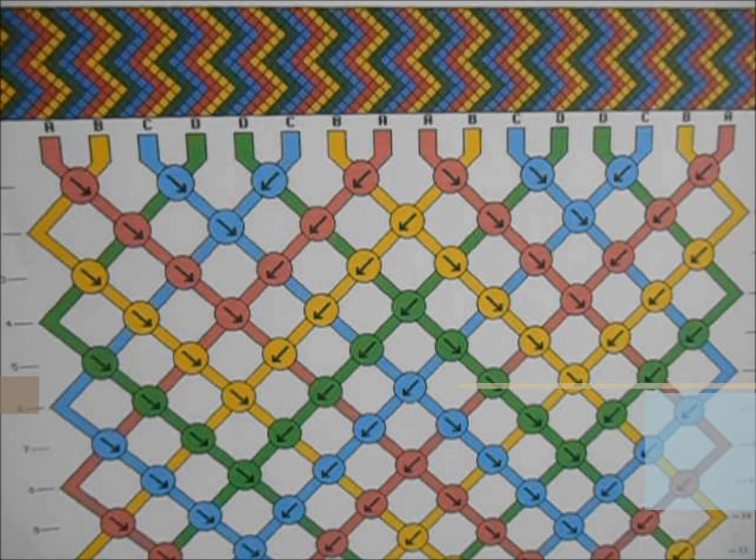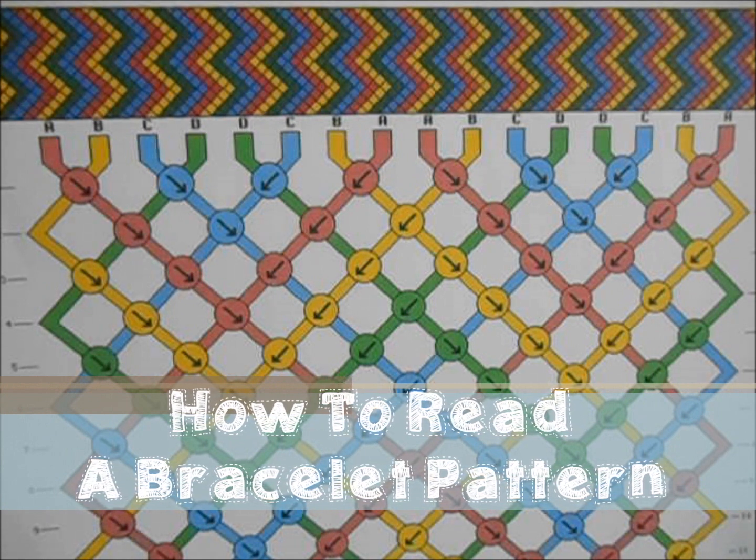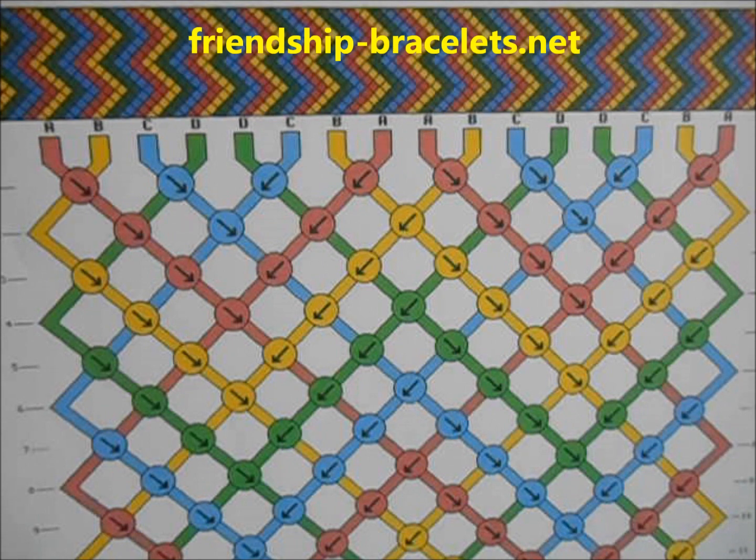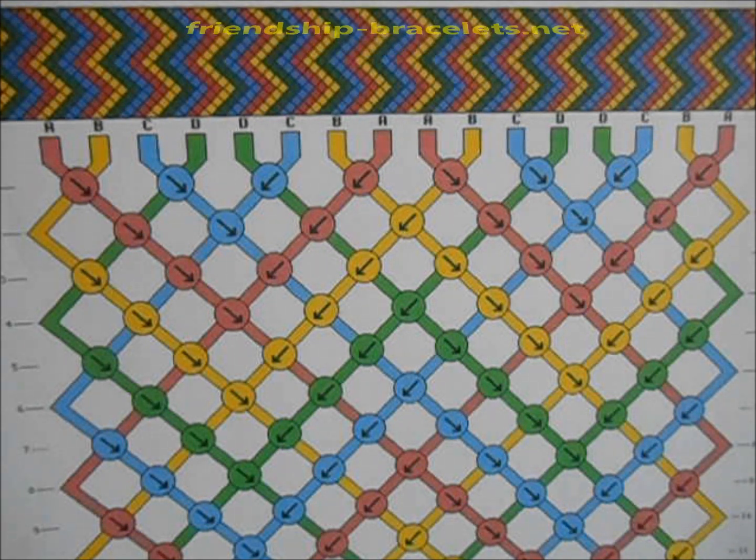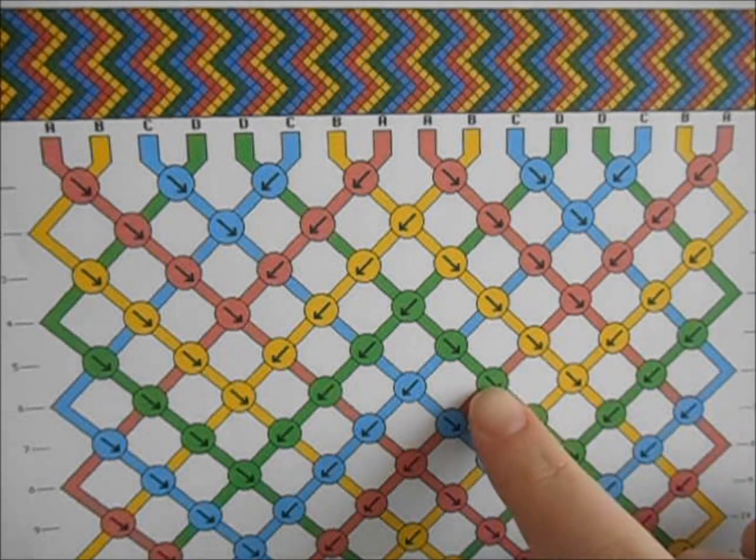In this video I'll be showing you how to read a friendship bracelet pattern. This friendship bracelet pattern is from friendship-bracelets.net and this is their double chevron bracelet. There's actually four different symbols to a friendship bracelet pattern.